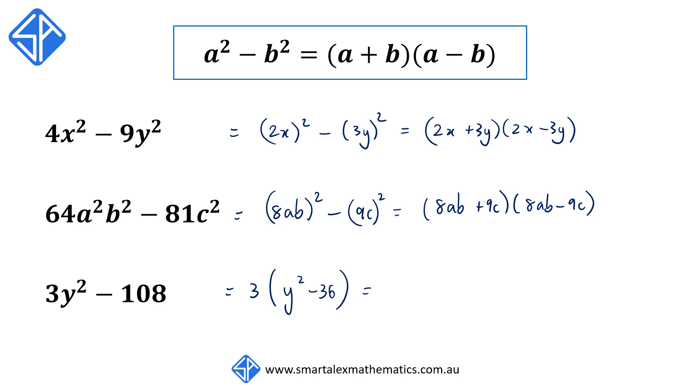We now have got a difference of two squares. We can rewrite this as 3(y² - 6²), which factorizes to 3(y + 6)(y - 6).